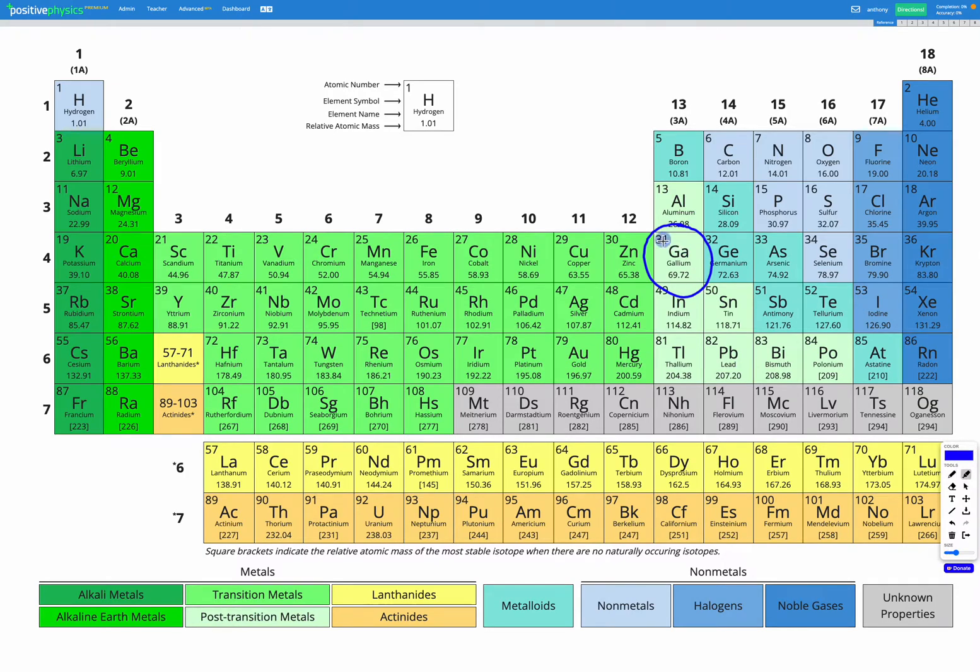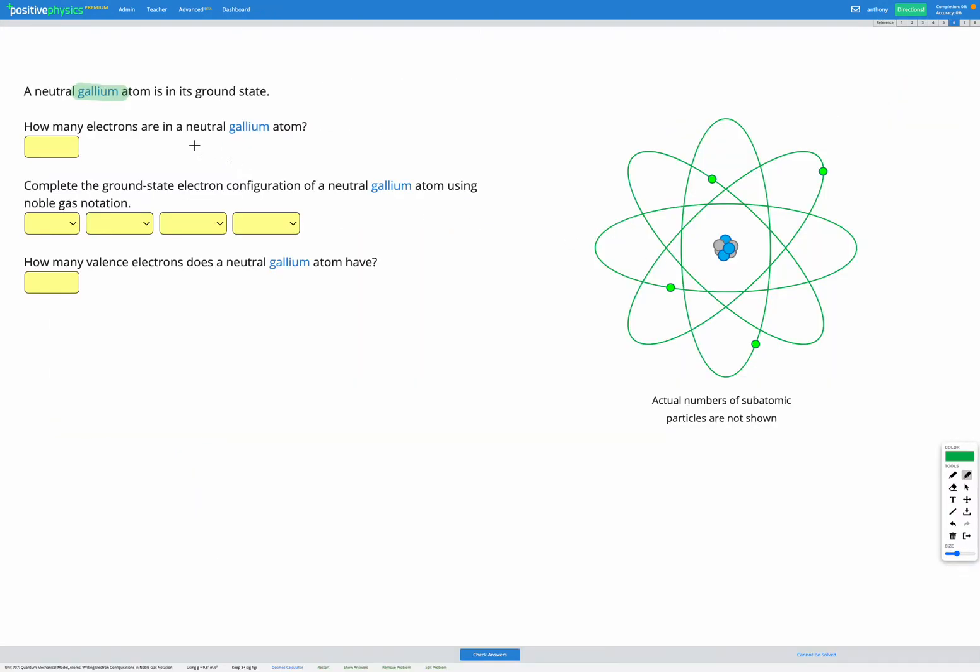We're looking for the atomic number, which is the top left, that's 31. That tells us the number of protons. So gallium has 31 protons in it. Since it's a neutral gallium atom, we must have the same number of electrons so that they cancel out to give us a total charge of zero. So we must have 31 electrons to match our 31 protons.